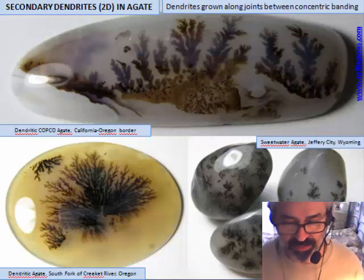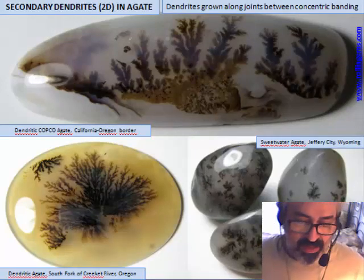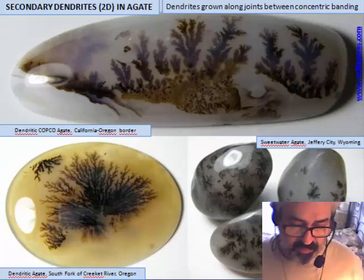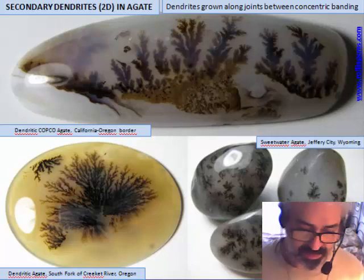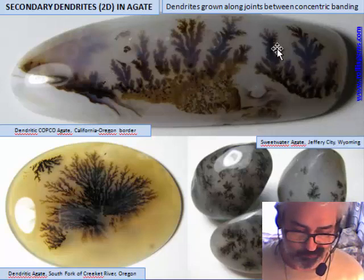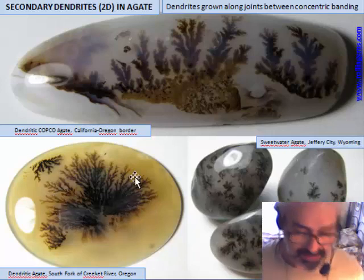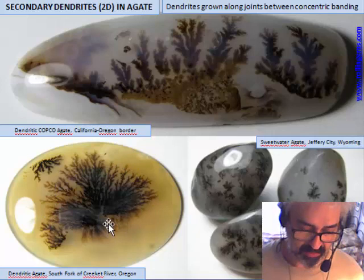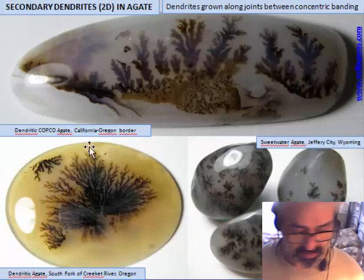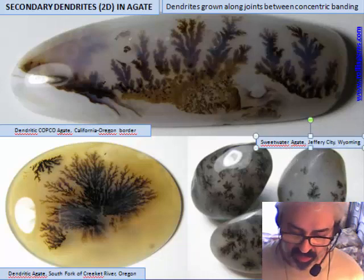Usually the deposit of dendrites is a small one. A few famous deposits from the United States include one from Copco in Northern California — a nice dendrite, but small stones. From Cricket River in Oregon, found inside limb casts, they have very nice dendrites but usually small size. Very tiny are the dendrites from Sweetwater in Wyoming.